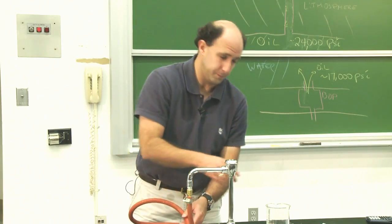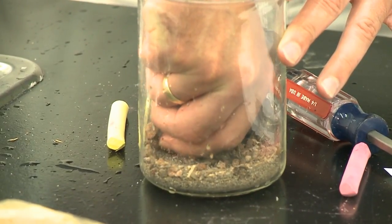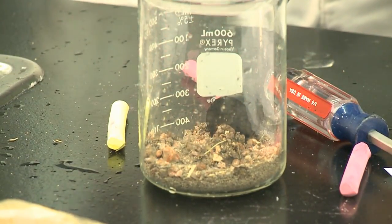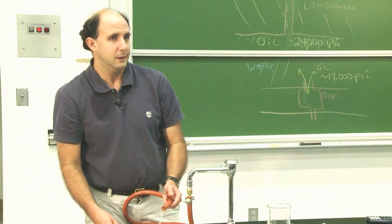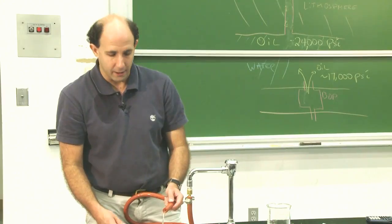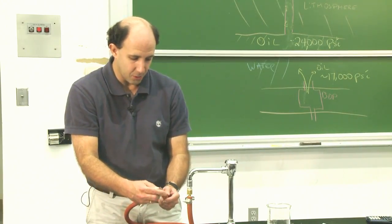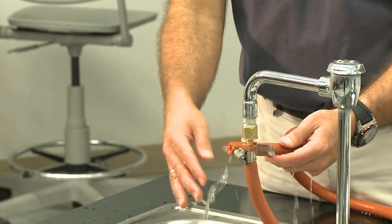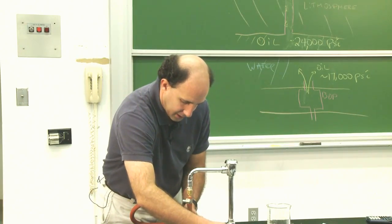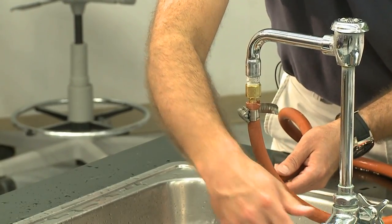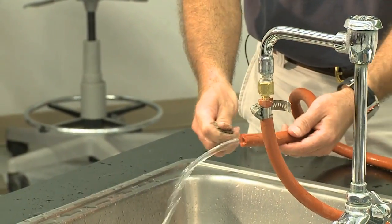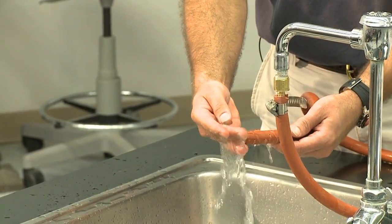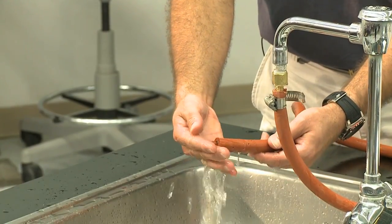Then they had the top kill solution. The top kill solution was to inject all sorts of concrete, tennis balls as I recall, rubber, tire, some sort of heavy mud. And the problem is that, as you can see, I'm coming out at a pretty high pressure. And I try and force pebbles in. What happens?